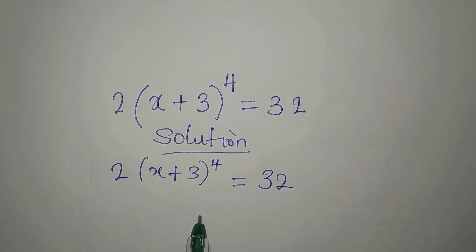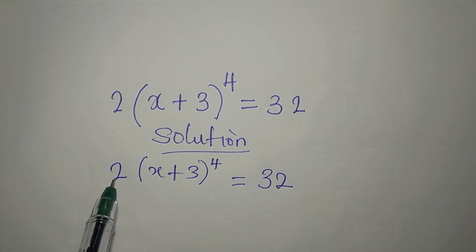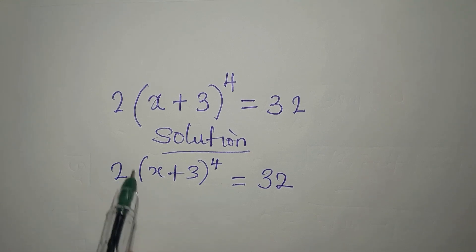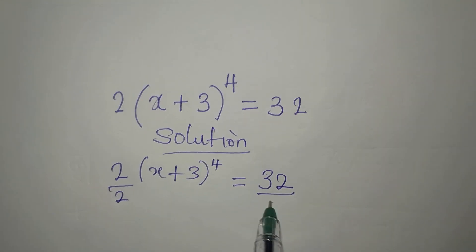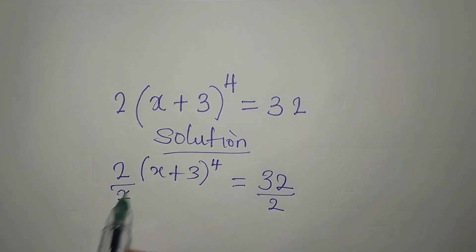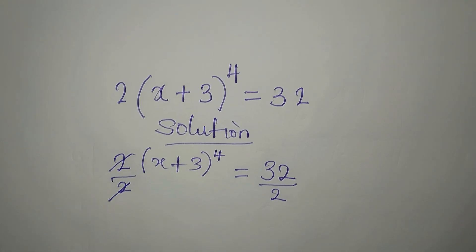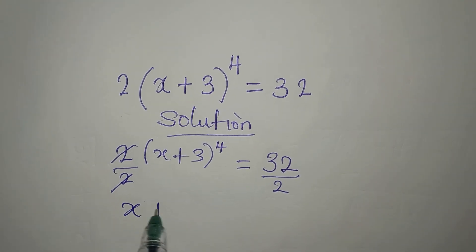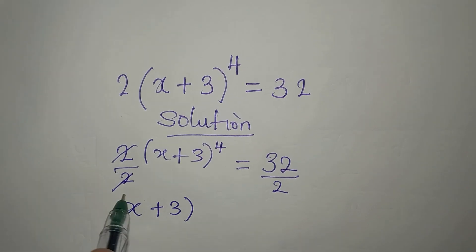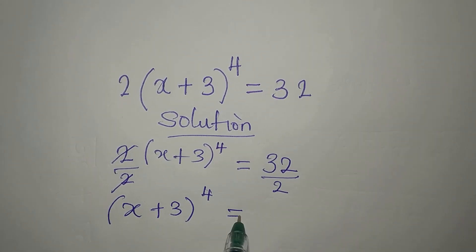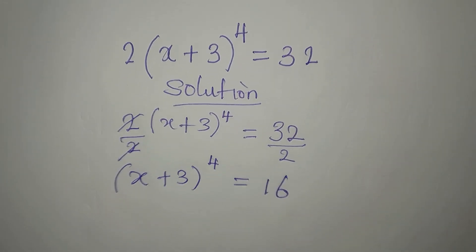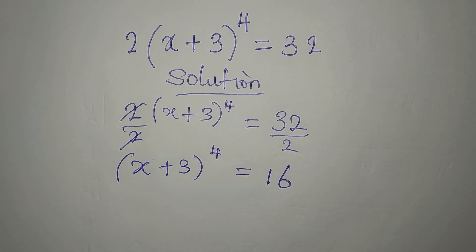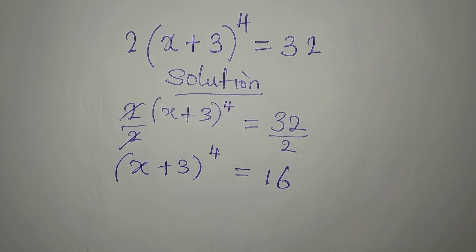The first thing we are going to do is pick out this two from here. This two has no business with this power, so we can divide by two on both sides. Two goes with two, and now we have (x + 3) to the power of four equals 32 divided by two, which gives us 16.